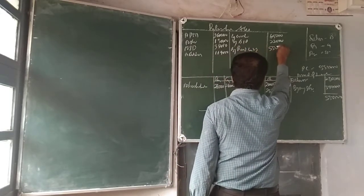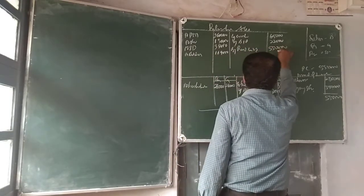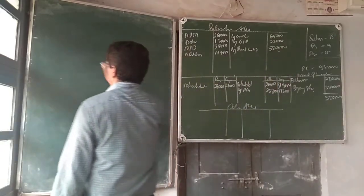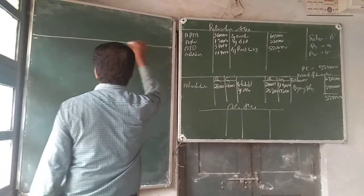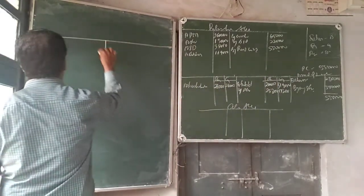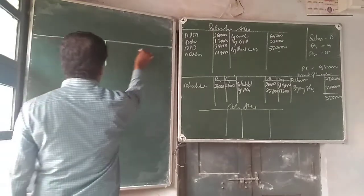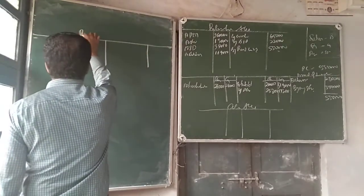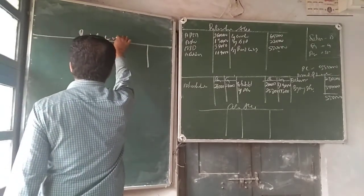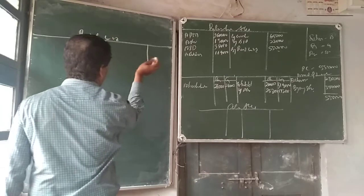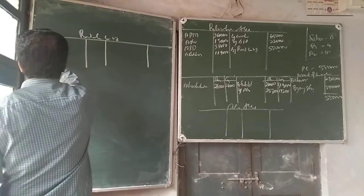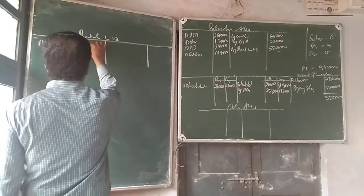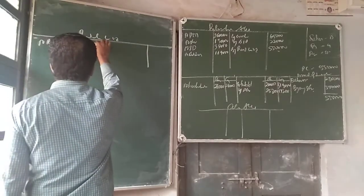Now we are supposed to prepare the Raghah Limited account. 5,50,000. To Raghah Limited account — to realization: 5,50,000.